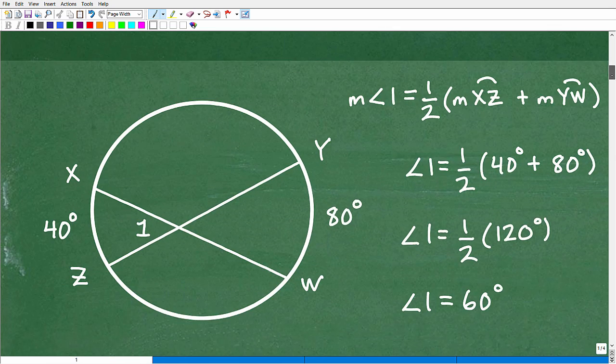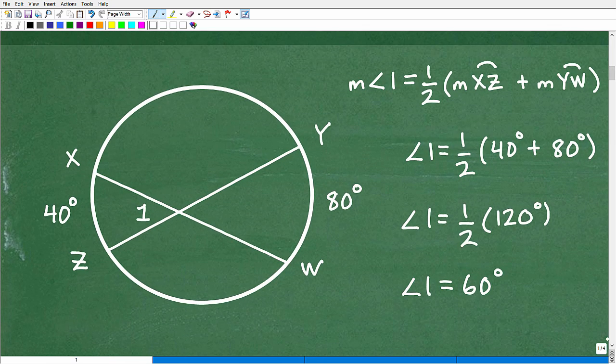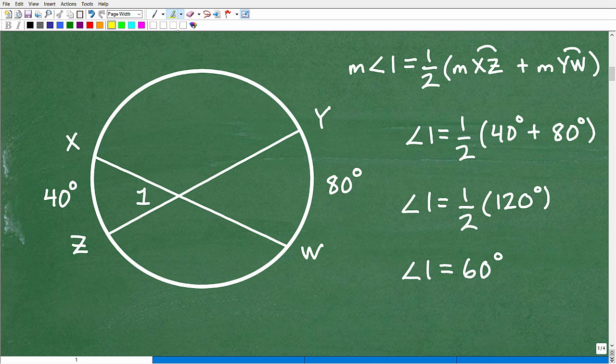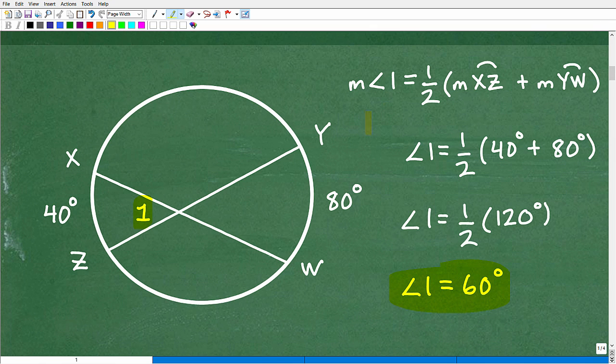Okay. So here it is. It doesn't require a lot of work, but the answer is angle 1 is equal to 60 degrees.